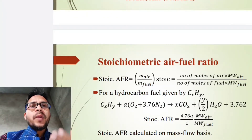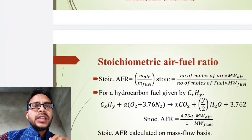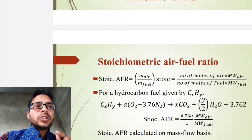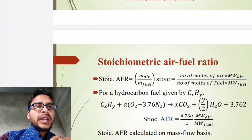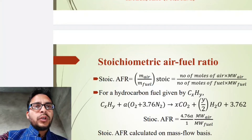What is stoichiometric air-fuel ratio? It is the ratio of mass of air to the mass of fuel at stoichiometric conditions. It is also equal to the number of moles of air multiplied by the molecular weight of air, upon the number of moles of fuel multiplied by the molecular weight of fuel.